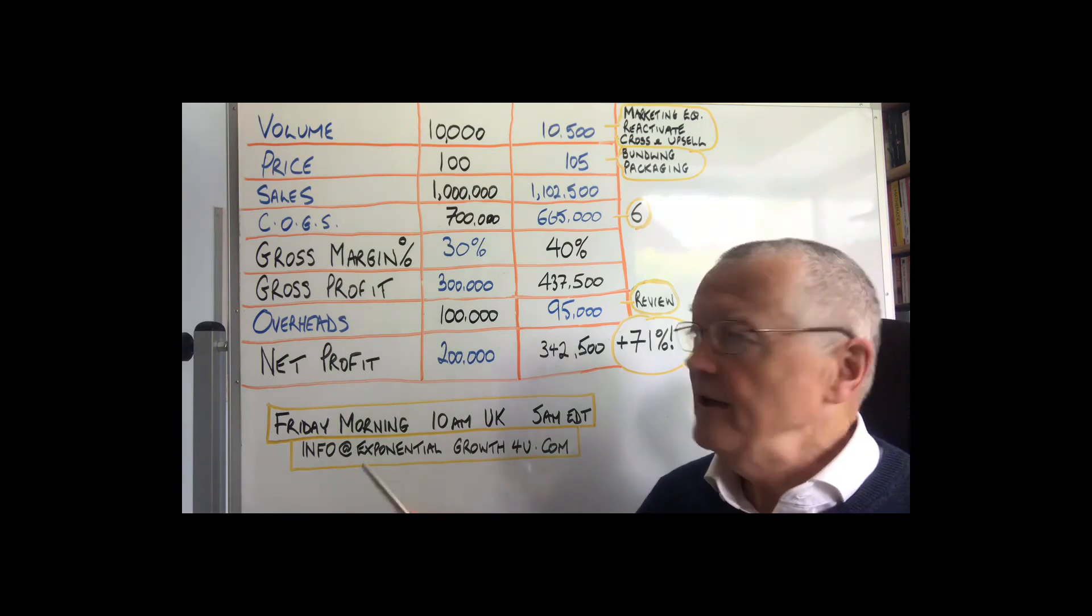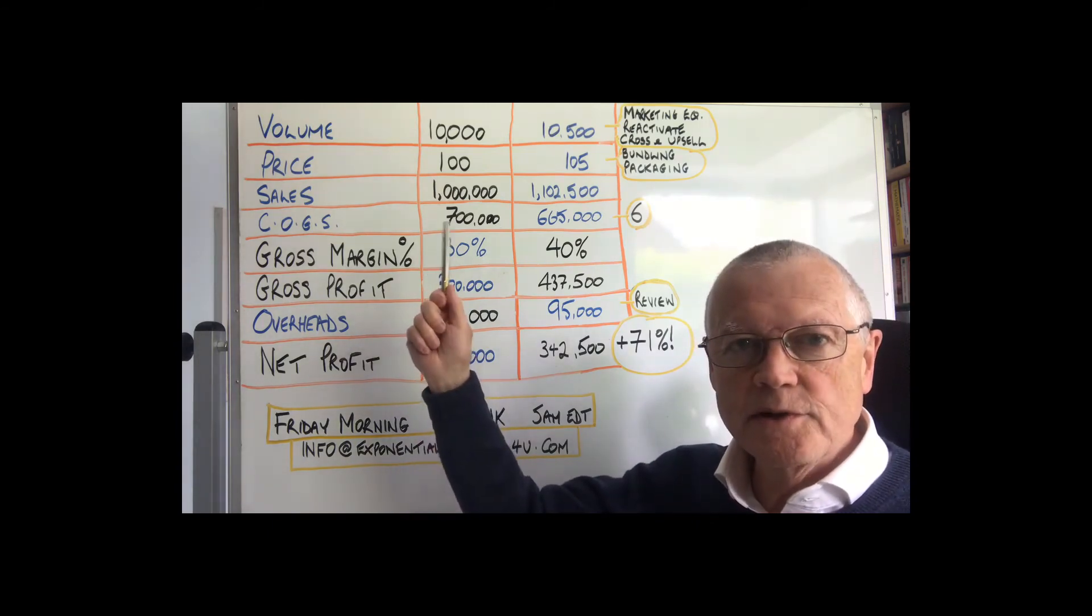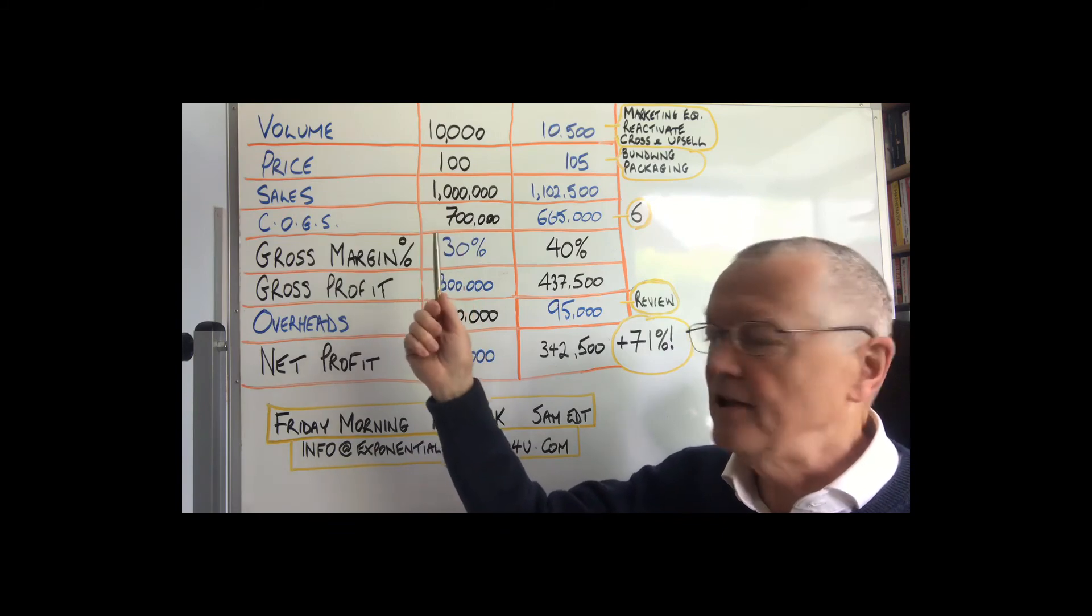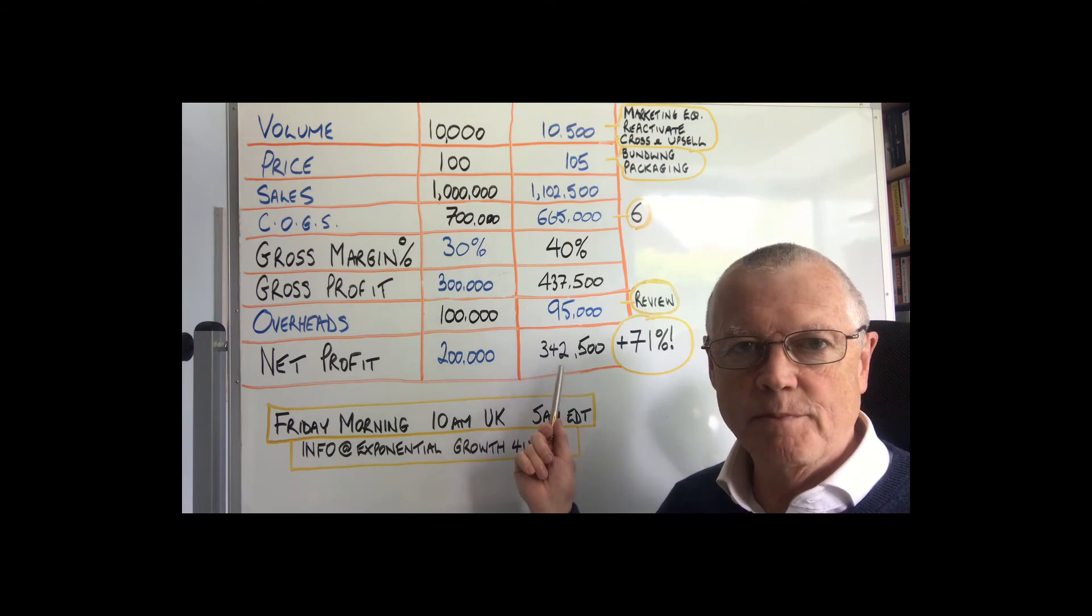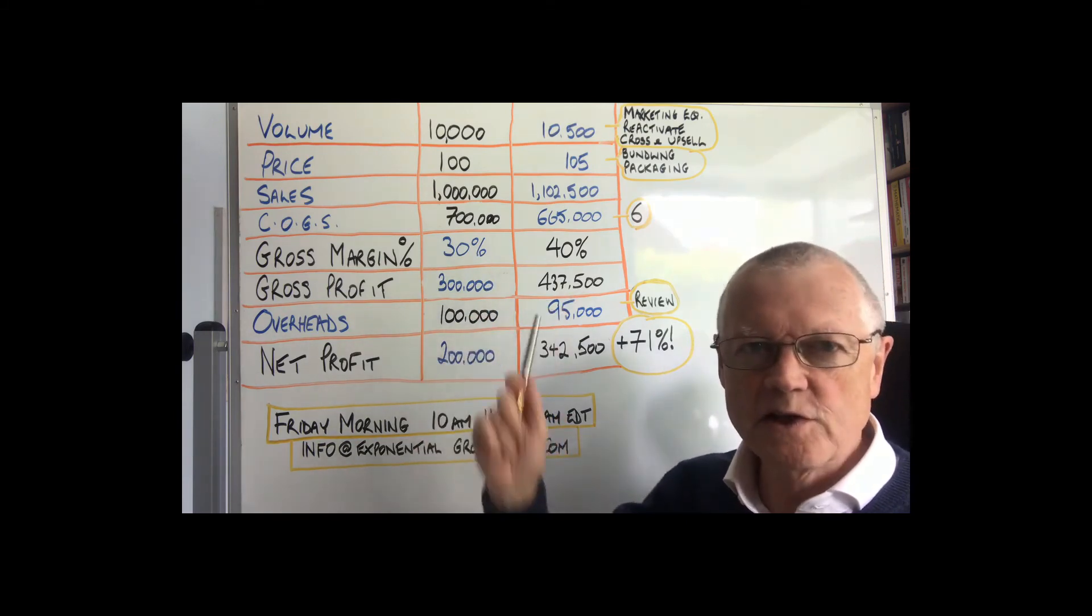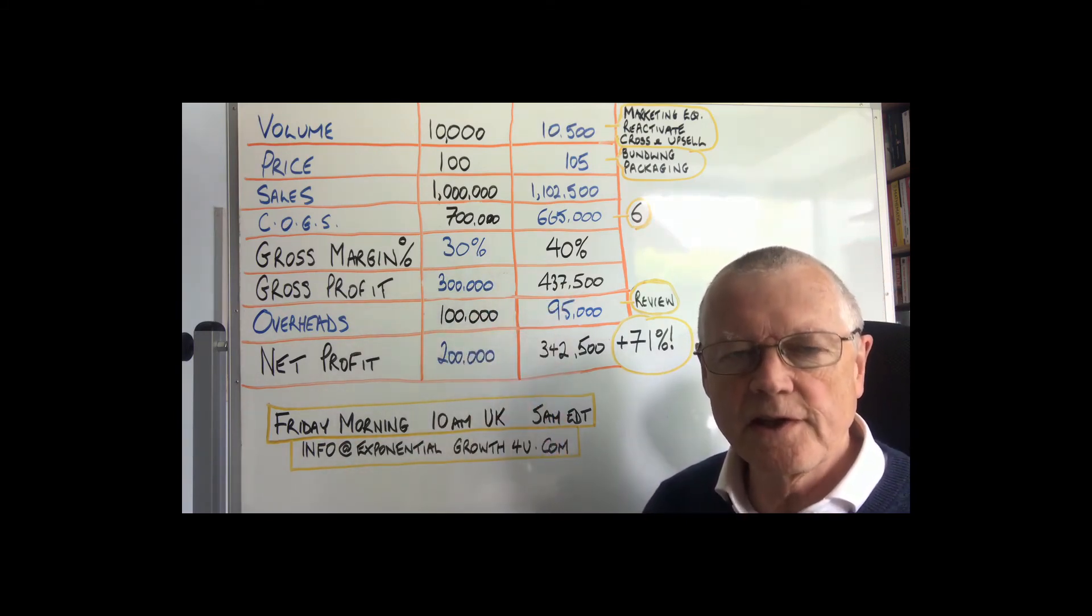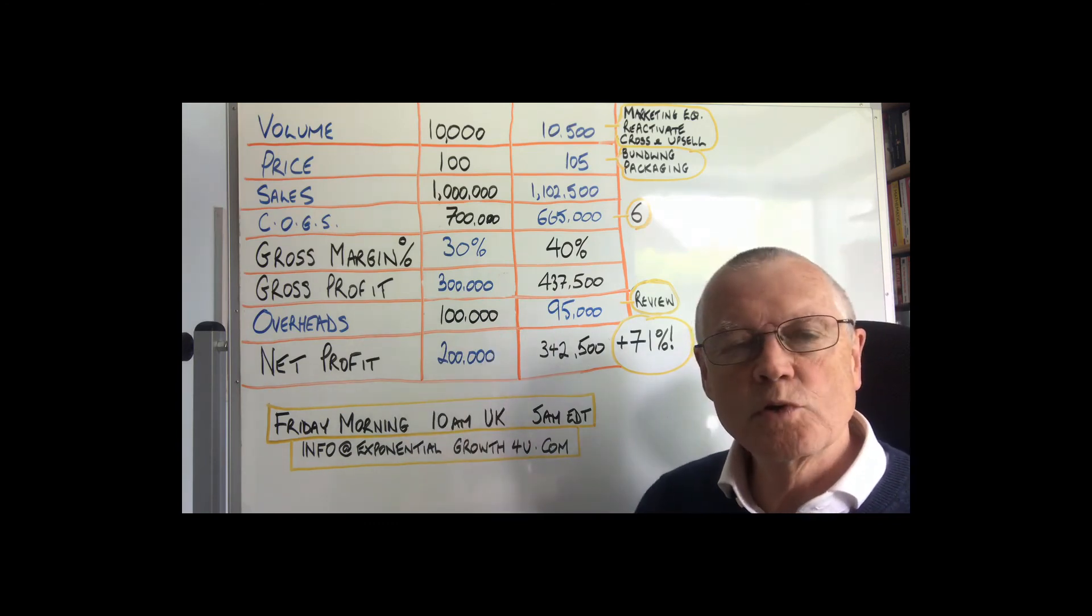So in summary, four small changes to a typical company or business, only four 5% changes, will make a huge difference generally to their bottom line. It depends on the exact figures, but generally you're going to see a hugely significant improvement just by making four small changes.